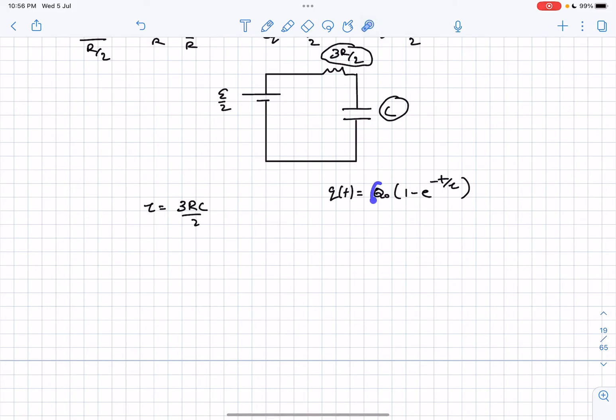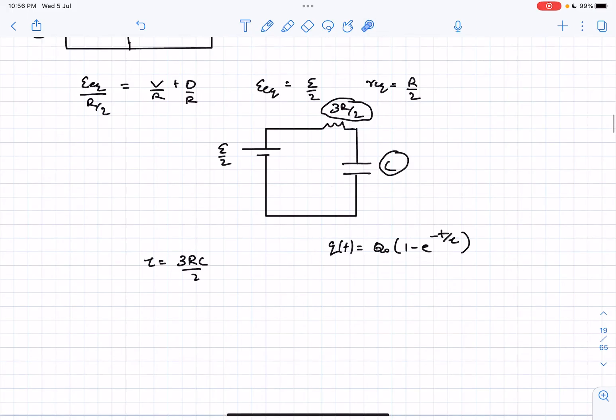Q naught is the charge after a very long time. After a very long time, the current becomes zero because the capacitor is fully charged, which means the potential drop across the capacitor would be V by 2.